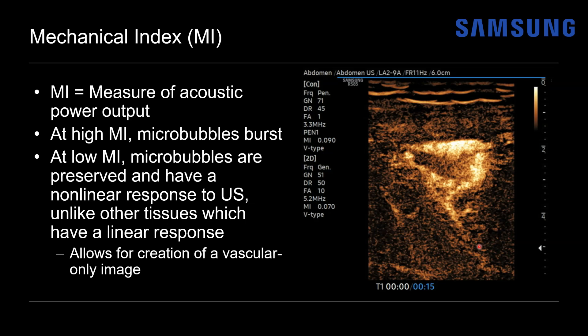When we want to disperse the microbubbles, we'll actually turn up the mechanical index temporarily. The trade-off to using a low mechanical index is that while it's great for microbubbles, it's not so great for the grayscale image — because of lower power output, the image becomes darker and lower quality. But that's okay, since we're using the B-mode grayscale image mainly as a localizer to find the lesion of interest.